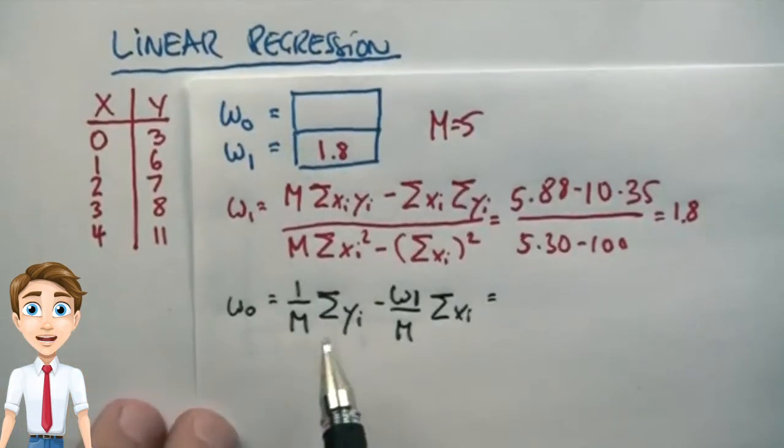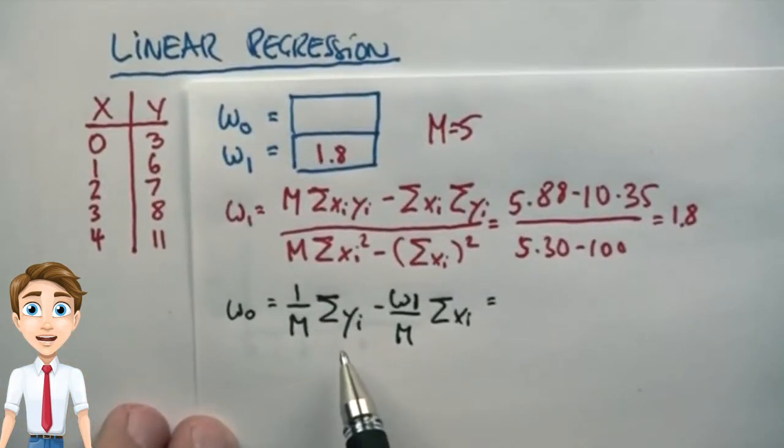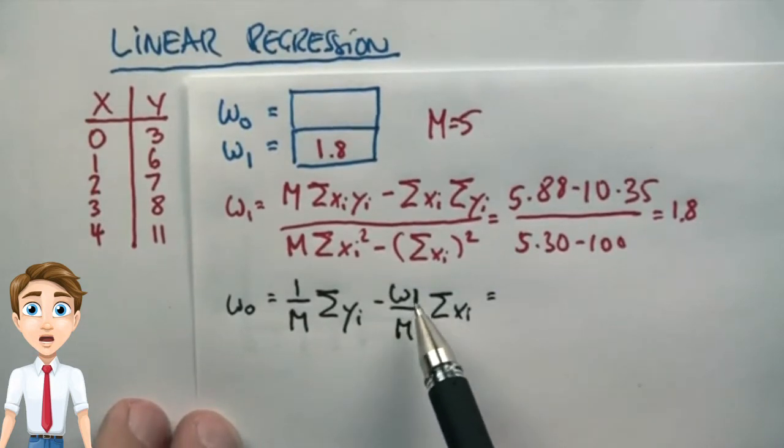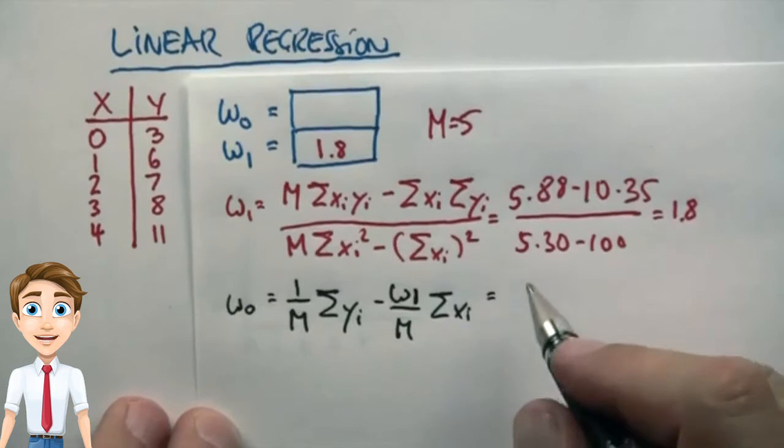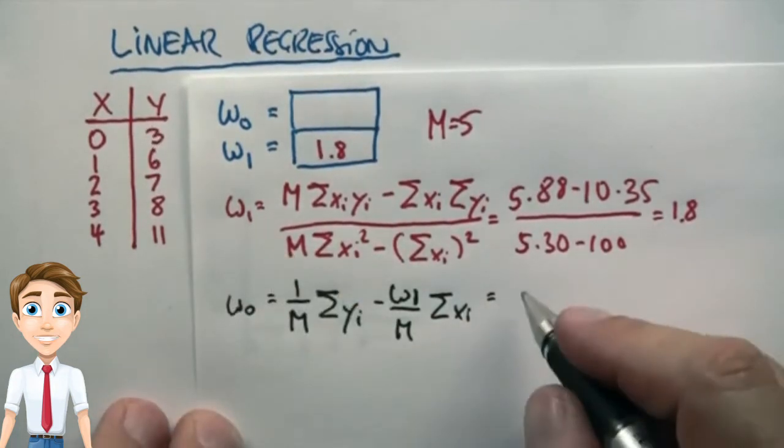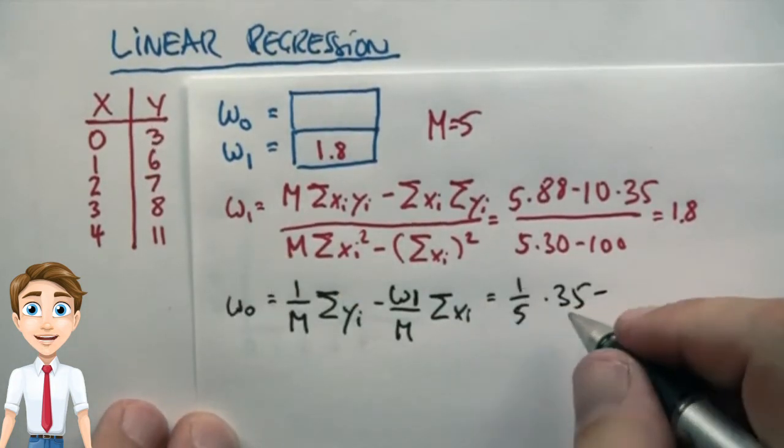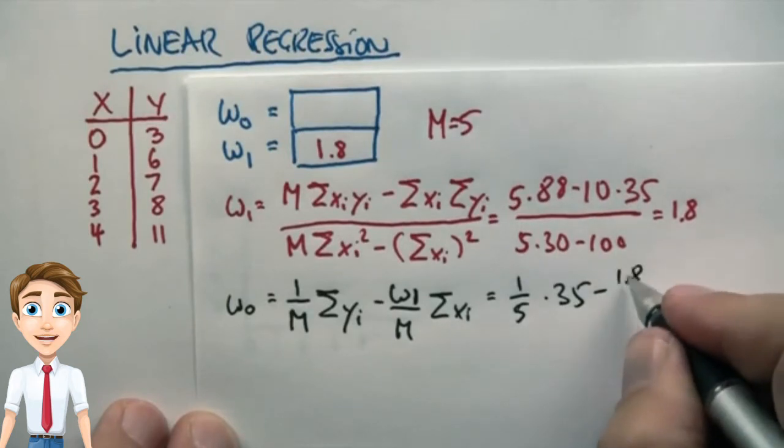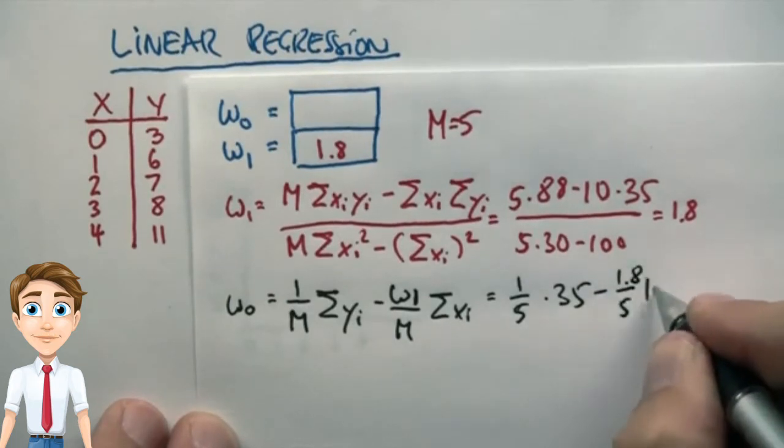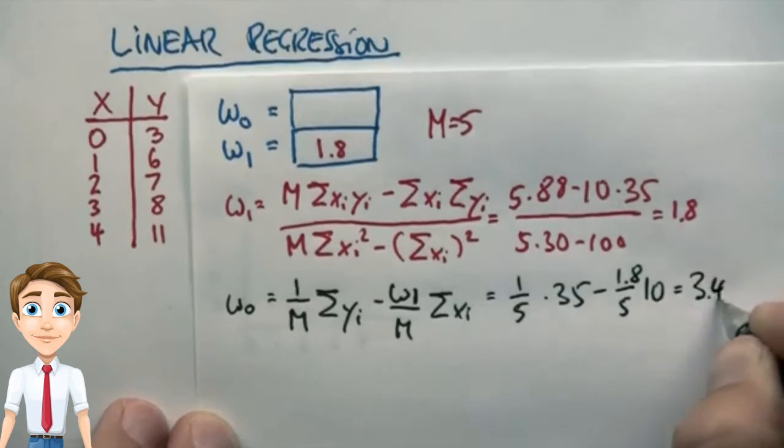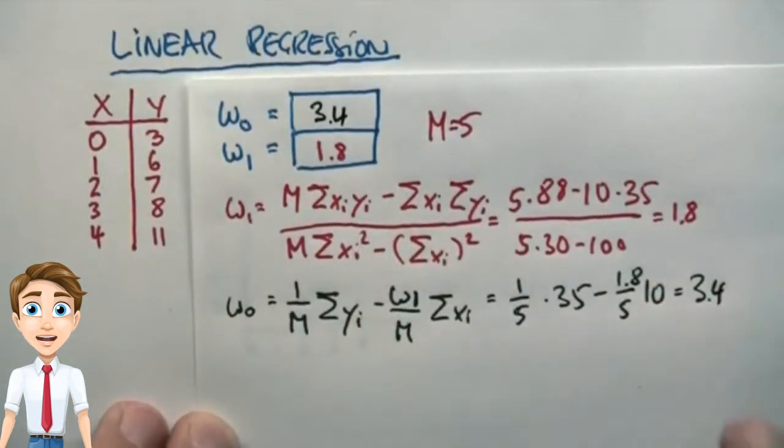w0 was obtained by 1 over m times sum over y's minus w1 over m times sum over x. And plugging in the table over here gives us 1 fifth times 35 minus 1.8 over 5 times 10, and that is 3.4, which would have been the correct answer over here.